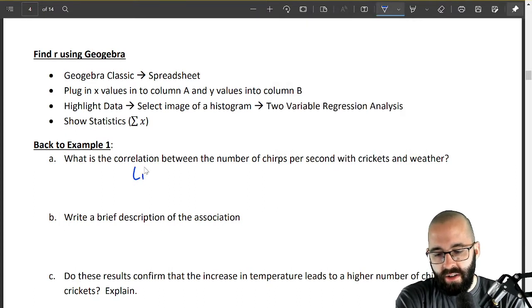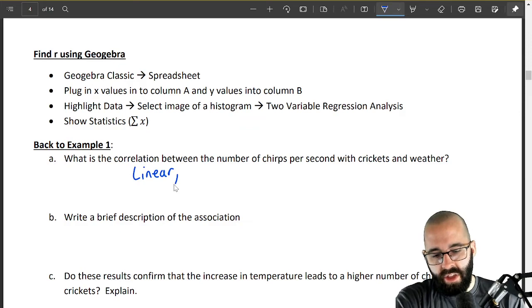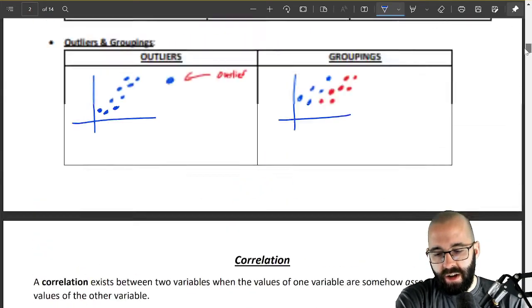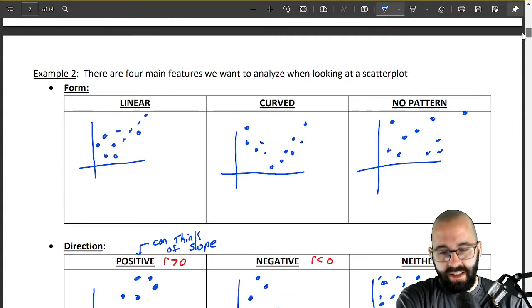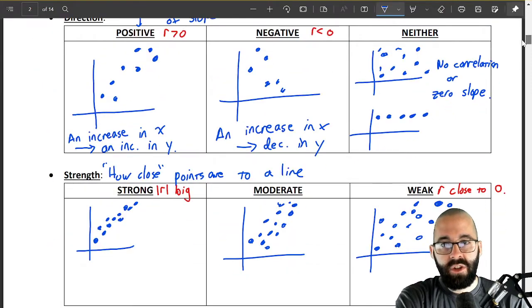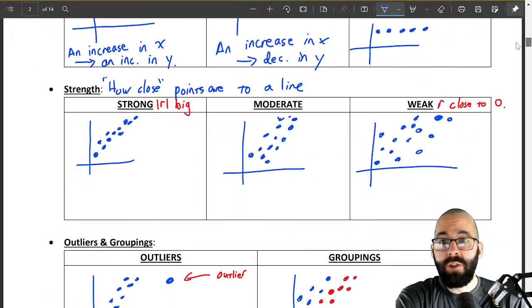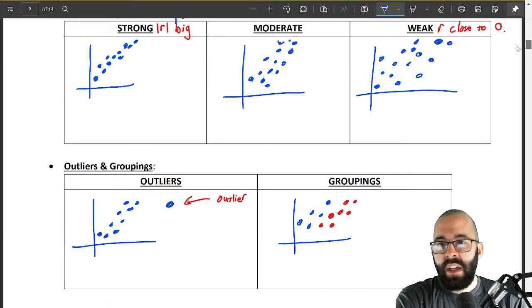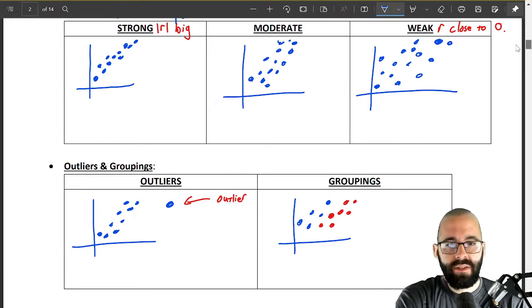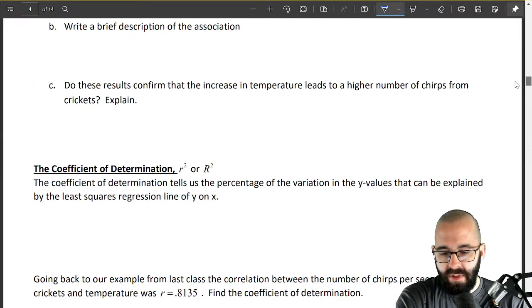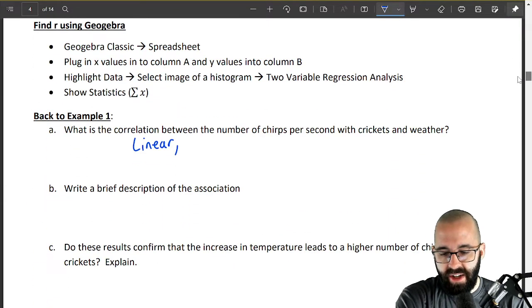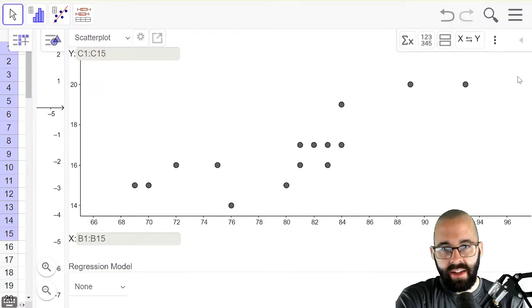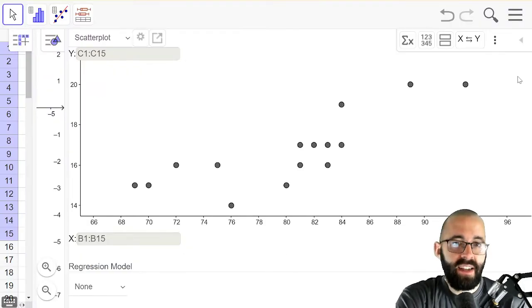Look at all of the things that we should be using to talk about this. Is it linear, what's the form, what's the direction positive negative, how strong is the correlation, any outliers? And again we're not going to really deal with groupings here. So yeah our case is linear, it's positive and I'd say it's weak.